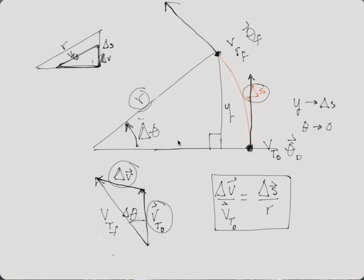So we're going to actually take our initial velocity, our initial tangential velocity, and we're going to just take it to the other side. So we end up with delta V equals VT initial times delta S over R.